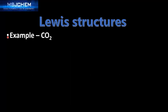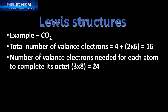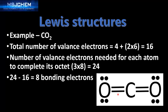Let's try another example: CO2, carbon dioxide. Carbon has 4 valence electrons and oxygen has 6, so 4 plus 2 times 6 gives us 16 valence electrons. Each atom needs 8, so 3 times 8 equals 24. Subtracting 16 from 24 gives 8 bonding electrons. In the Lewis structure for CO2, carbon must form double bonds with each oxygen to complete its octet. If you're finding it difficult to fill the octets, try using double bonds.